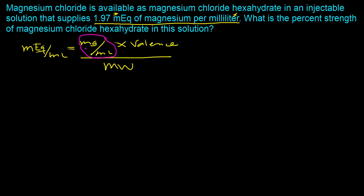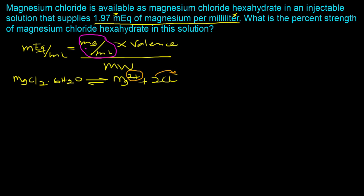To determine milligrams per milliliter, we need the valence of the compound. The molecular formula of magnesium chloride hexahydrate is MgCl2·6H2O. In an aqueous environment, it dissociates into the magnesium cation and two chloride anions — the water becomes part of the solvent and doesn't dissociate. The valence is the charge on the cation or anion: the magnesium cation has a charge of +2, and the two chloride anions give an absolute charge of 2. So the valence of the compound is 2.